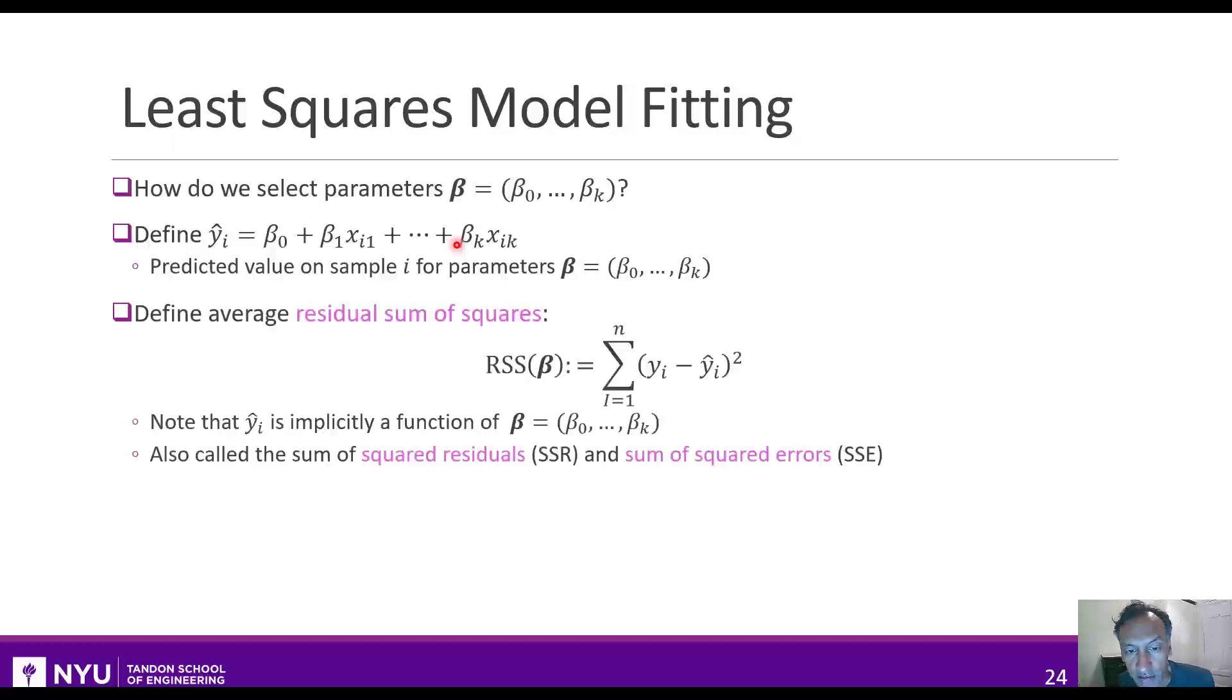The key idea in fitting a multiple variable linear model is to define something called the residual sum of squares. What it is, is just if I pick a beta, I look at every sample, and I look at the squared difference between the measured value yi and the predicted value y hat i, all squared. Note that this function is implicitly a function of beta, because the y hat i's are functions of beta. This is sometimes called the squared residuals, or the sum of squared errors.